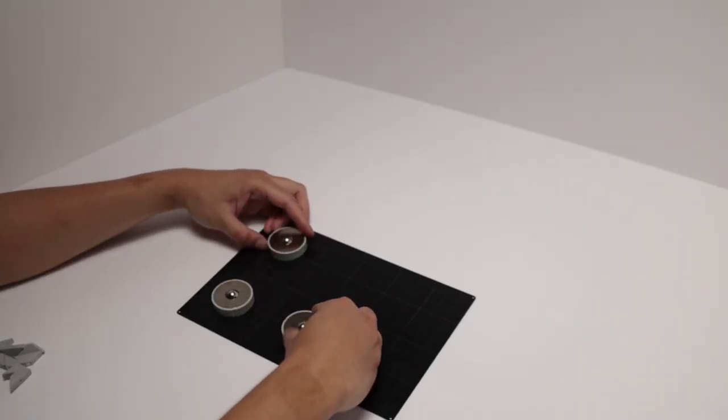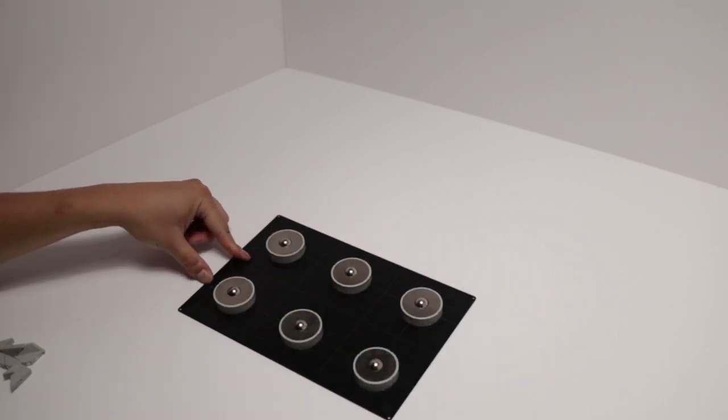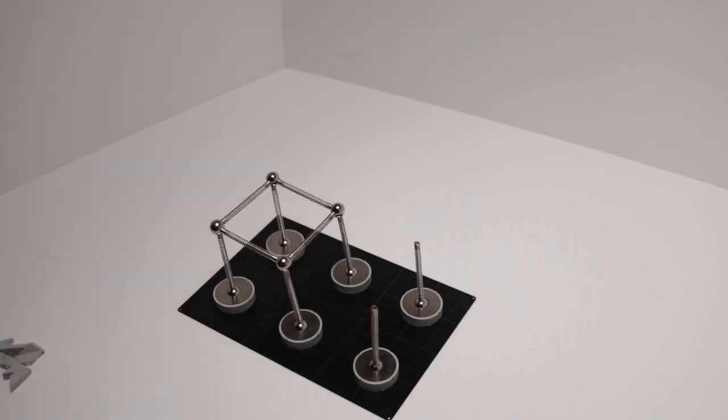Here I'm using kit number two. What's unique about this kit is that it allows you to do column splices and beam splices. It has shorter member segments that I'm not really using in this demonstration.